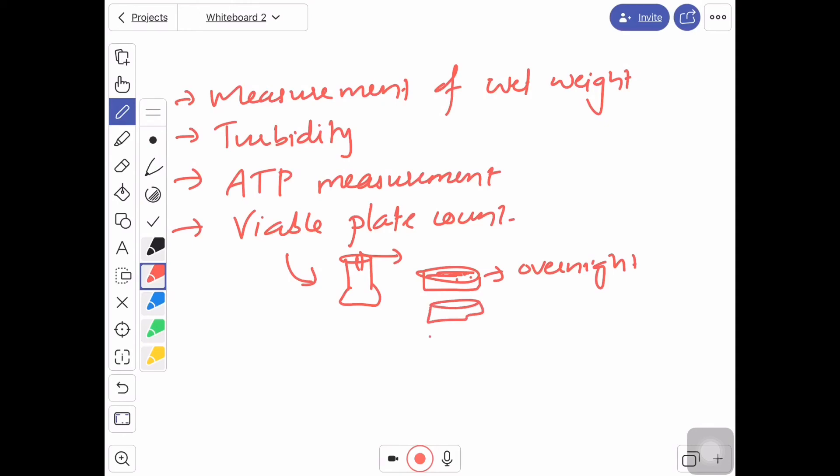At regular intervals, we have taken samples from this, so we will get different plates. By counting the number of colonies, we can easily assess whether the growth has happened or not, but the result will come only on the next day. This viable plate count will give us the number of living cells. Other methods may not be giving the exact number of living cells.